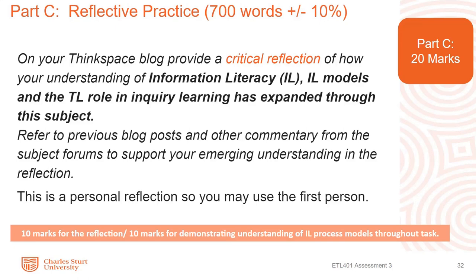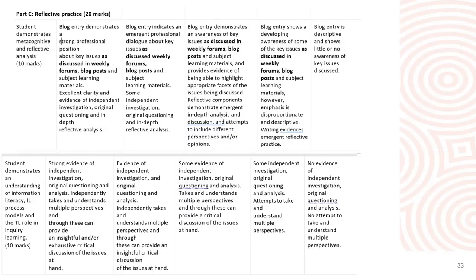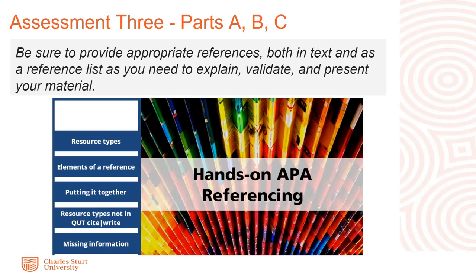Basically these 20 marks are demonstrating your overall understanding of information literacy. Once again, I draw your attention to the marking criteria to guide you and to give you guidance as to what you are wanting to aim for and what you need to include. These criteria sheets are what I will be looking at when I am assessing your work. For parts A, B and C, you need to ensure that you provide appropriate references — both in-text references and the reference list. You must be drawing on the research literature and professional literature to explain, validate and present your material. This image is hyperlinked and gives you more practice and information on APA referencing if you think you might need that.